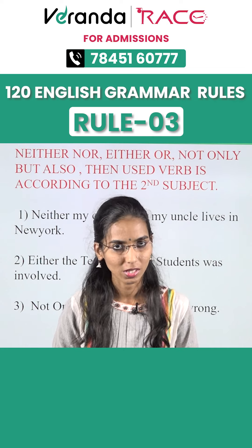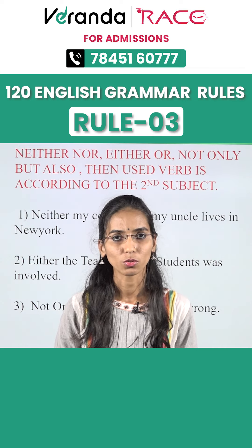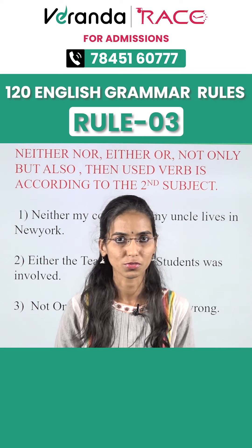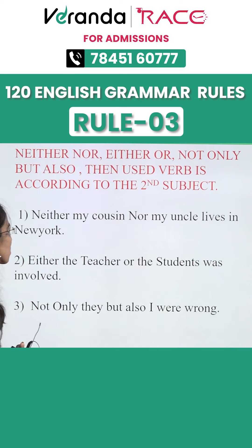Hi everyone, I am Vidya from Moran Arrays. Today we are going to discuss the third rule of 120 rules of grammar. In the given sentence, the words neither nor, either or, and not only but also — the verb is used according to the second subject.